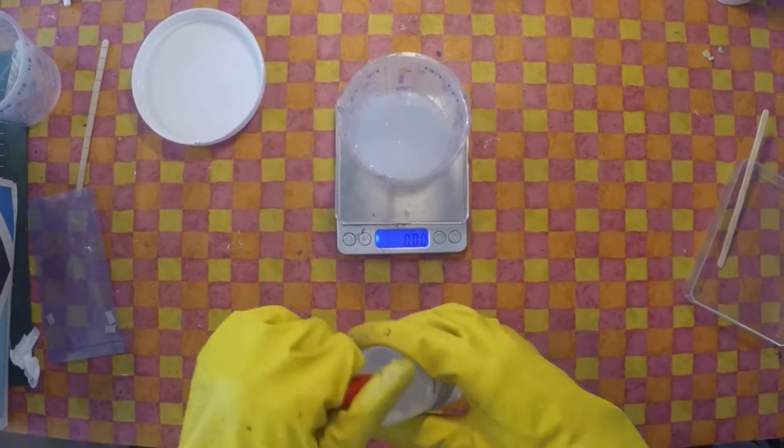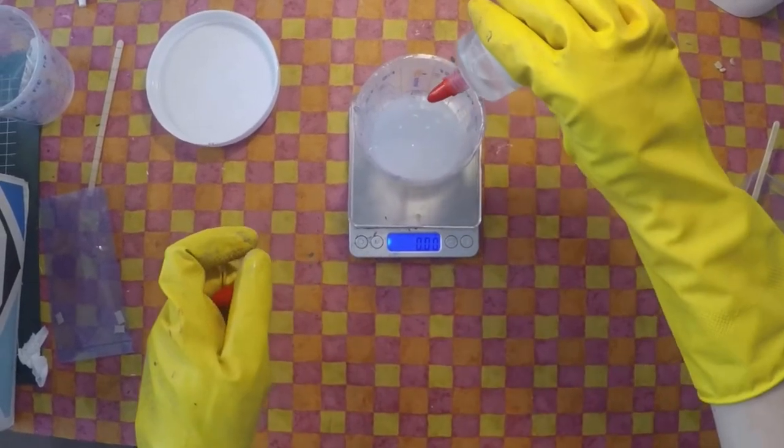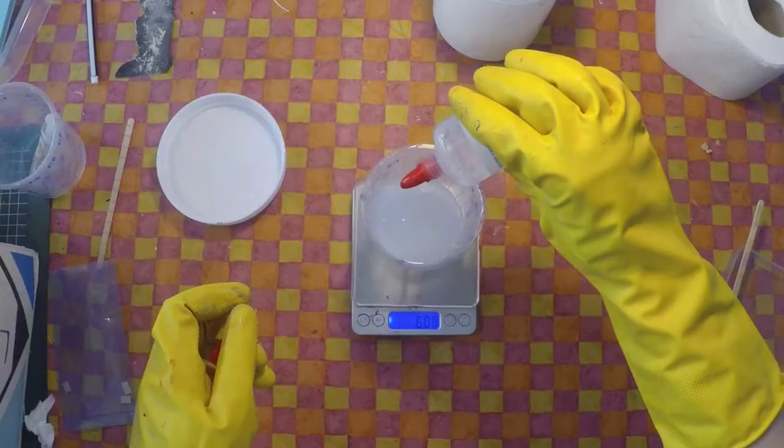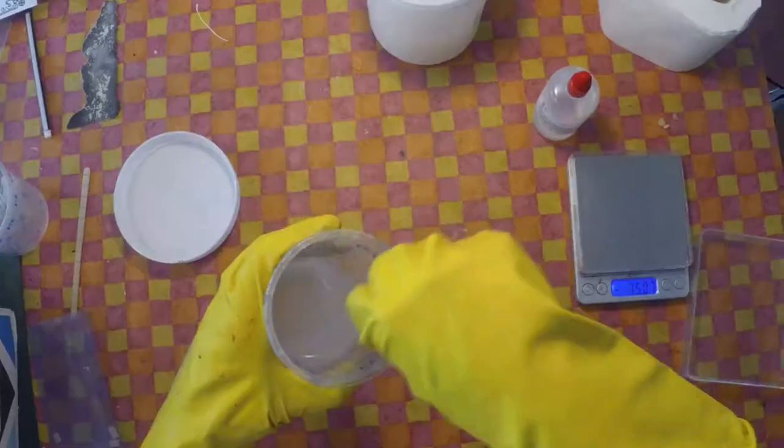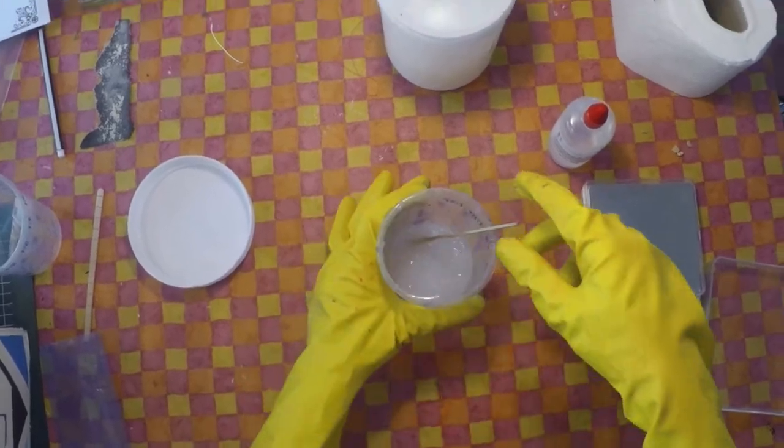I always use two containers when mixing it. First I pour the two liquids in one container, measuring carefully. Then I mix it, transfer it to another container and mix it again. That way I'm sure there's no unmixed silicone left.